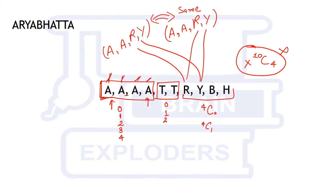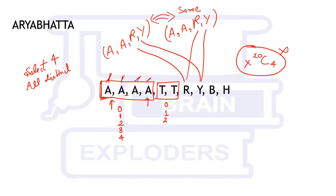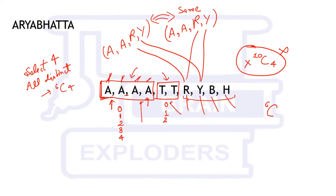Now, if we are to select four letters that are all distinct, we have one, two, three, four, five, six distinct element types, and we have to select four — so this can be done by 6C4. If we are asked to select four elements such that two are the same and the remaining two are distinct, we proceed differently.